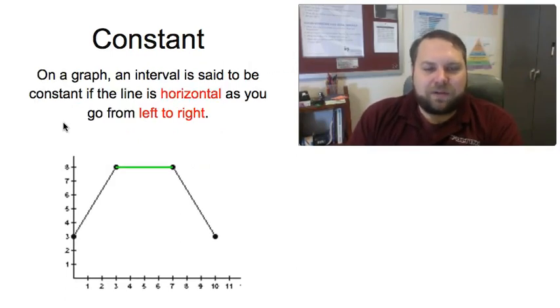Looking at the graph, we can tell if an interval is constant by looking for a horizontal line. Horizontal like the horizon means flat, so anytime you see that flat line, you see that you have an area where the interval is said to be constant.